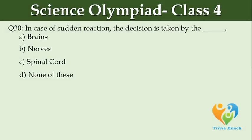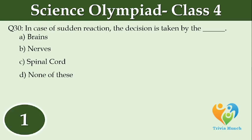In case of sudden reaction, the decision is taken by the dash. Option A: brain. Option B: nerves. Option C: spinal cord. Option D: none of these.